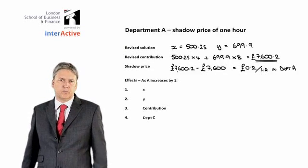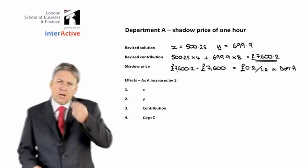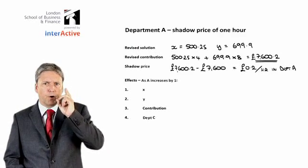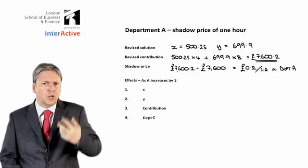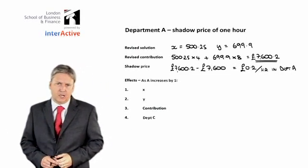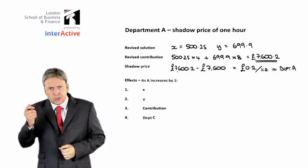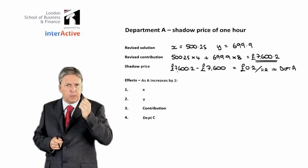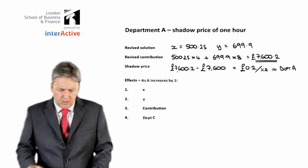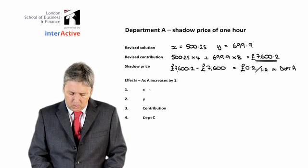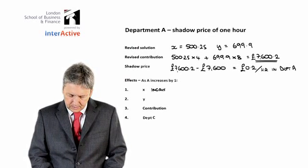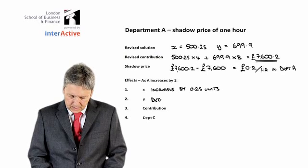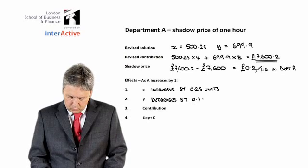That's the basics of the shadow price. Remember, that is the additional contribution generated by having one extra hour. Or, if you wish, it's the additional amount we are willing to pay for one extra hour — two sides of the same coin: additional contribution or additional amount we're willing to pay. So as department A increases by 1 hour, X increases by 0.25 units and Y decreases by 0.1 units.